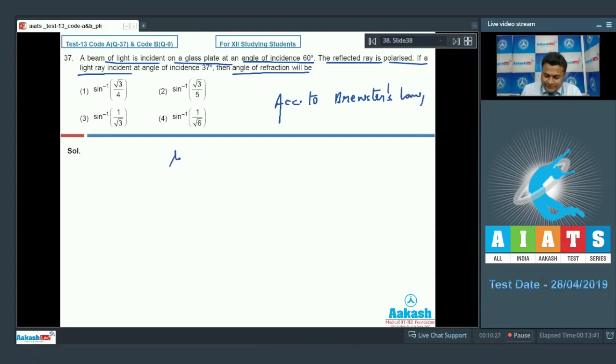We have refractive index mu equals tan of the angle of incidence for polarization, that is 60 degree here. So tan 60, refractive index we have got is root 3. Now applying Snell's law, we will get.